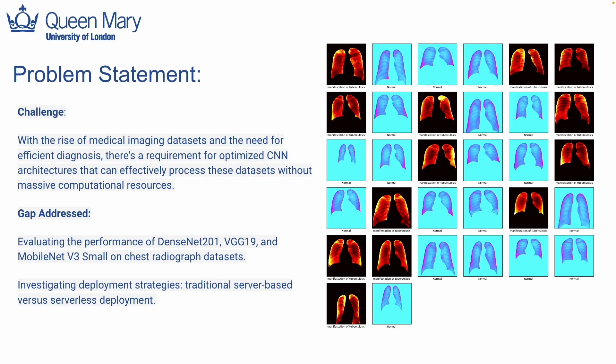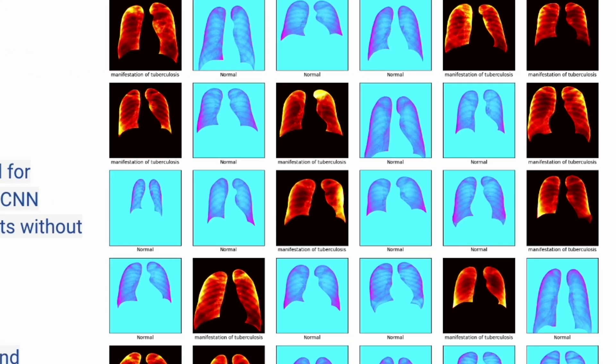As we know, the medical field is seeing a surge in imaging data, especially chest x-rays. The sheer volume and need for quick, accurate diagnosis demands efficient tools, but we need these tools to run effectively without always relying on heavy computing. Interpreting these images is not always straightforward — subtle differences can be easily missed, and that's where technology steps in. As you can see on the screen, the distinction between a normal lung and one affected by tuberculosis might seem minimal to the untrained eye, but they signify life-altering differences for the patient.